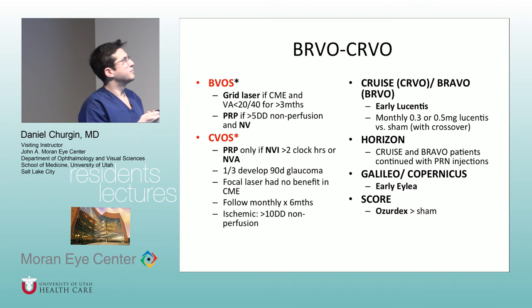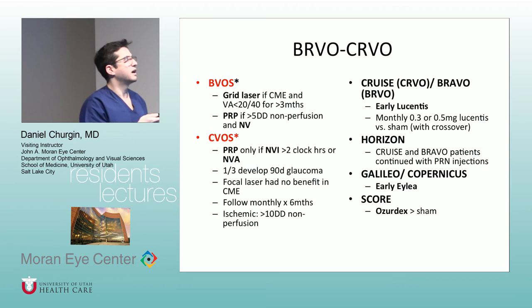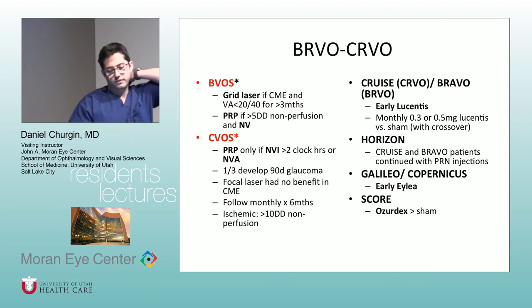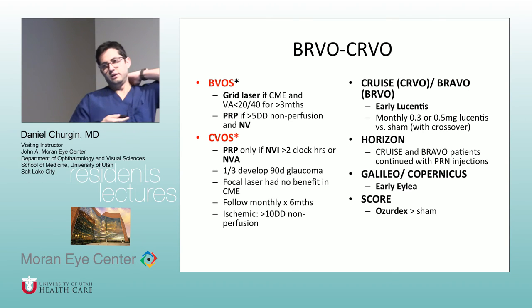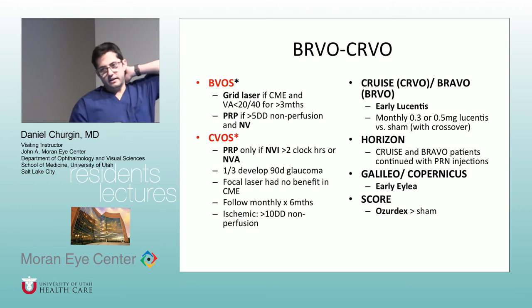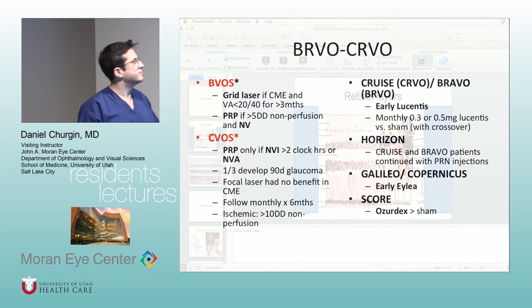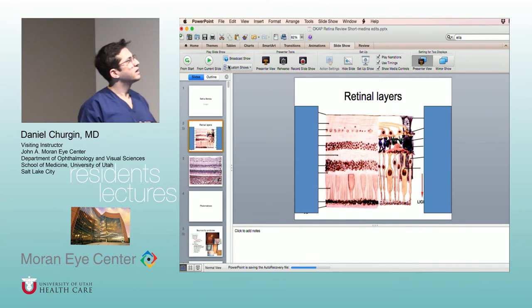These are some of the vein occlusion studies, basically taking you through the history — first justifying laser, then identifying the use of anti-VEGF. One key takeaway from the vein occlusion studies is that you don't do PRP unless they develop neovascularization.